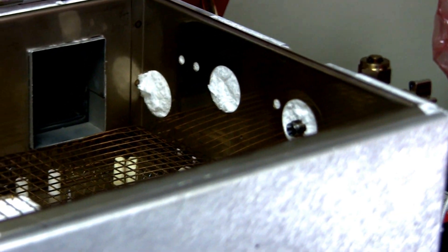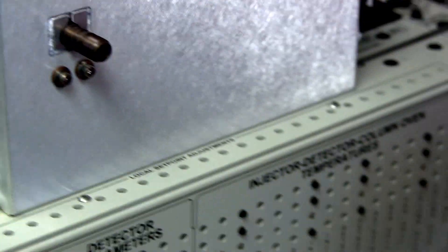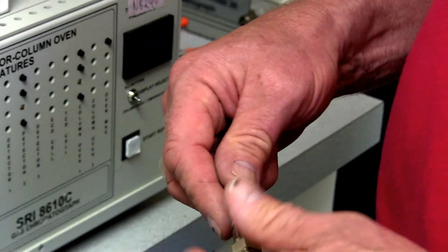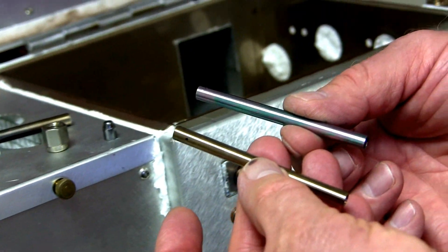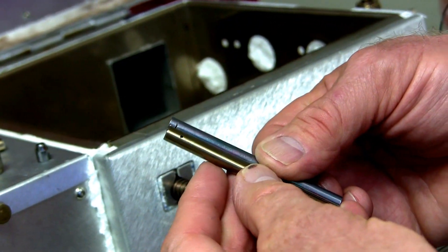Now to clean the injector liner, this is what the injector liner looks like. We actually have two different types of injector liners, two different inside diameters. One looks like this, the other looks like that. They're both exactly the same length.